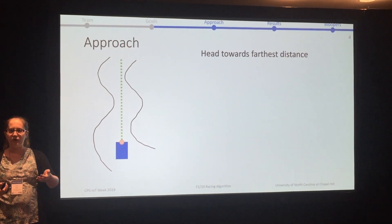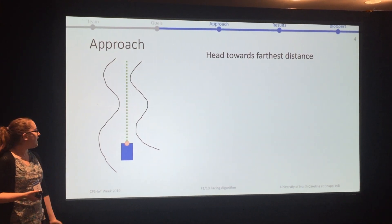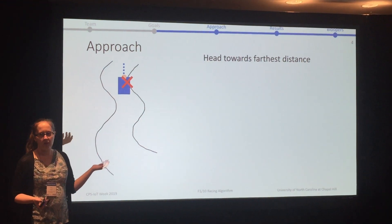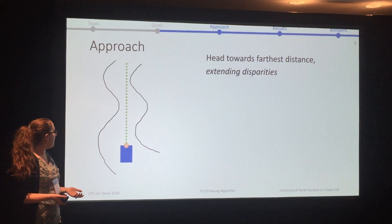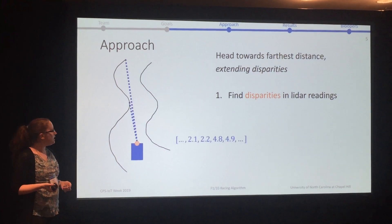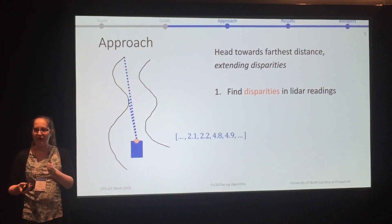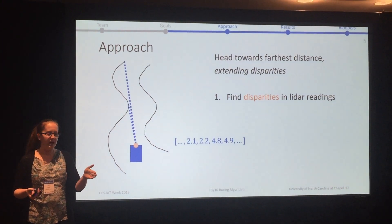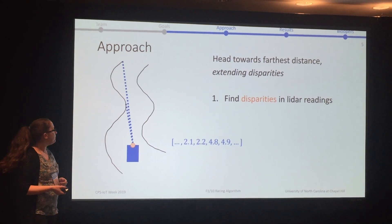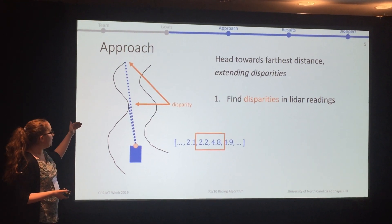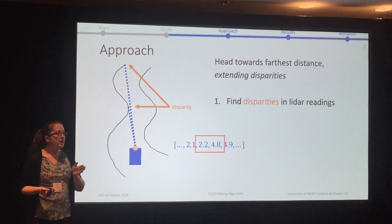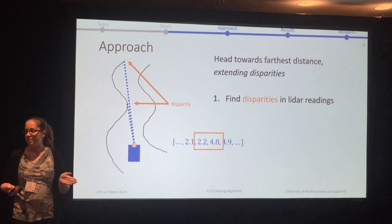Our general mantra was: find the farthest distance and go there. But as you can imagine, that's not always going to work — you might try to go the furthest distance and then hit a wall. So instead, we took the lidar reading and looked for disparities. This would be anywhere where there's a wall blocking a reading, so you have consecutive angles of the lidar giving very different numbers — for example, maybe 2.2 meters and then 4.8 meters. This indicates that something must be blocked.